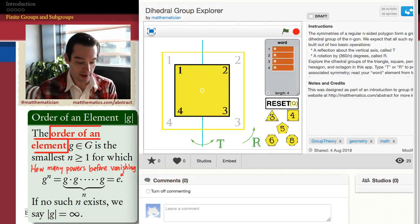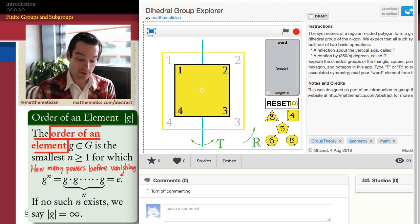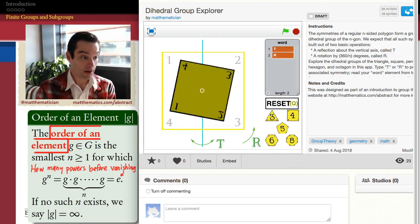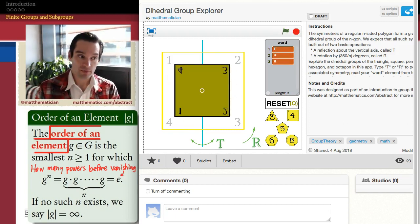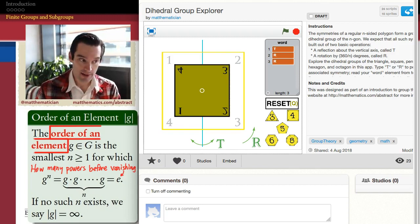So let's try that. If I do tr² once, tr, this is what I get. Clearly that thing is not the identity. So the order of that element is not one, therefore. So if I apply tr² again, let's see what happens. tr, r.